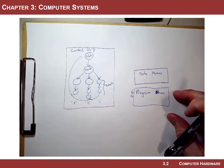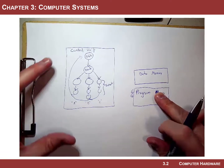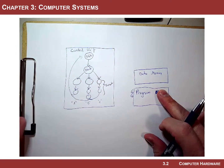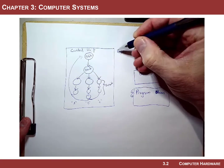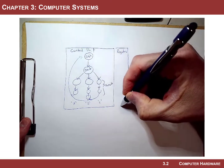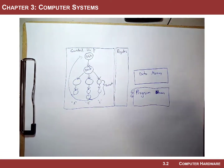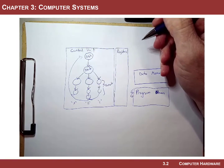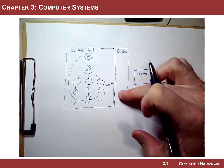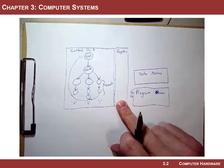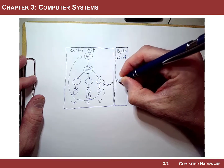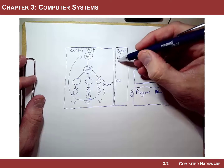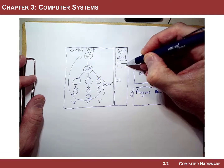We have data memory and program memory. Then we start thinking about other things that might need to exist in the computer — registers. Registers are fast storage implemented as a bank of flip-flops that hold information. They're synchronous and have enables so you can control when information is loaded into them. Some of these registers are going to be dedicated, and some of them are going to be general purpose.